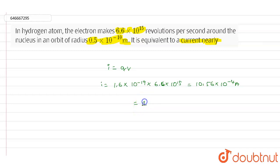By simplifying this, we will get the value as 1 milliamp. So this is the value of the current that we have found. 1 milliamp is the amount of current which is equivalent to the orbit of radius 0.5 × 10^-10 and electron moment of 6.6 × 10^15 revolutions per second.